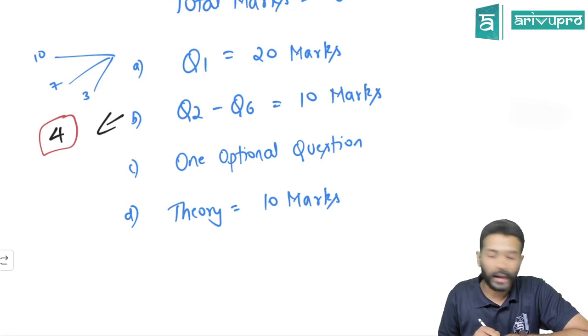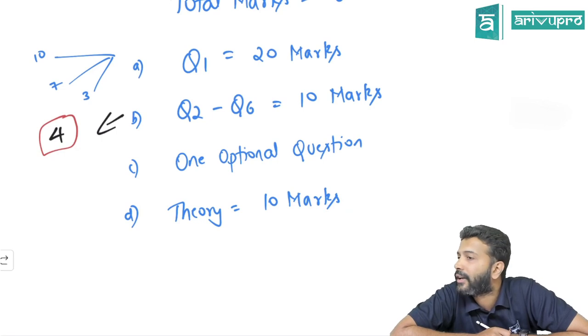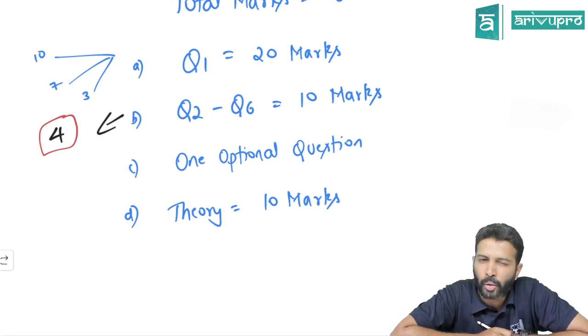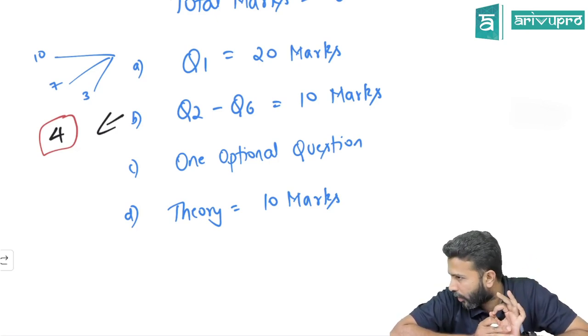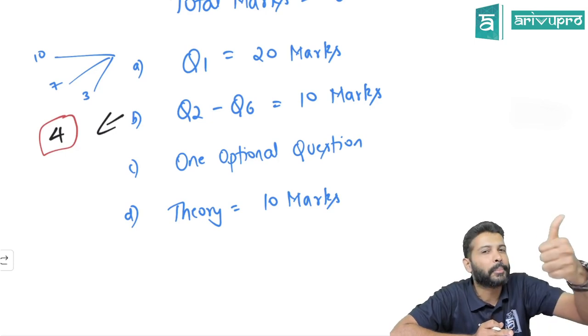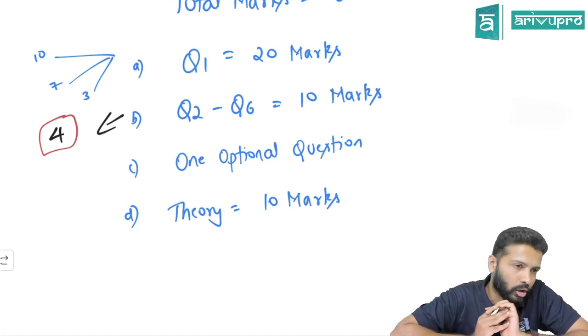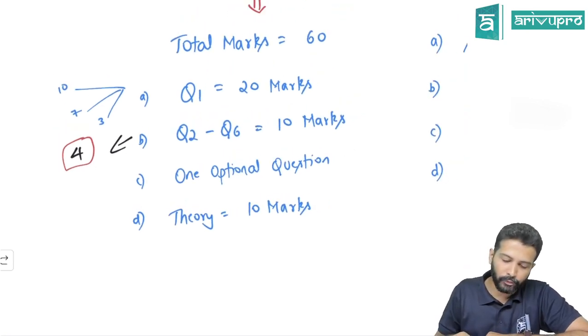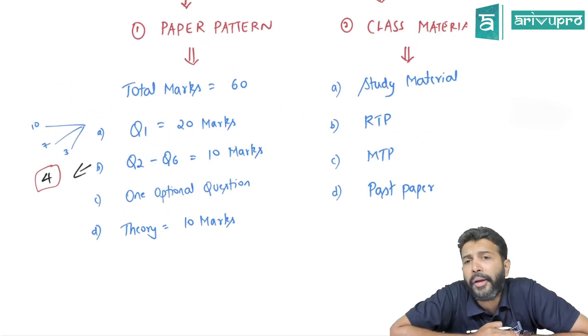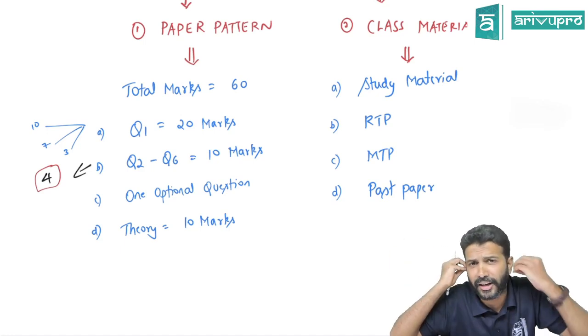In this paper pattern, you have a theory question which carries around 10 marks. FM is out and out practical - you have around 10 chapters, 8 chapters are practical oriented, 2 chapters are theory. Generally theory questions come from those particular topics - chapter 1 and chapter 2. Any confusion in the paper pattern?